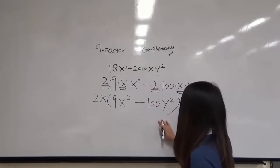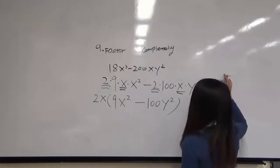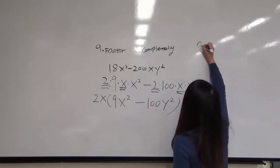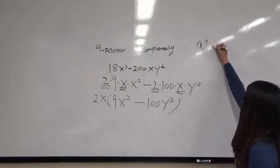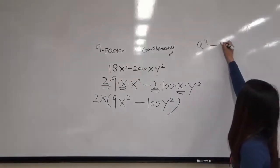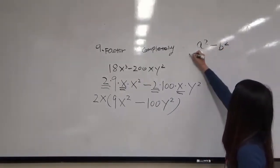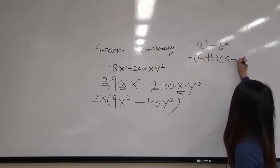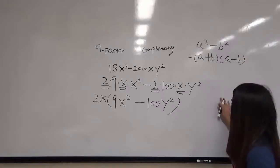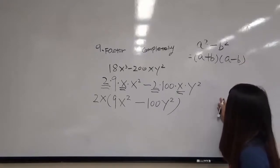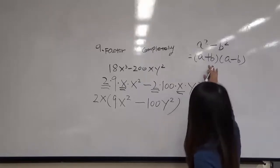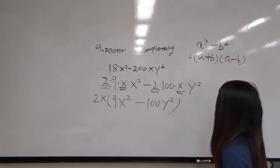We are going to use a formula which is called difference of squares. The formula says if we have a squared minus b squared, we get a plus b times a minus b. So we are going to match each term of this formula so we can factor it out.